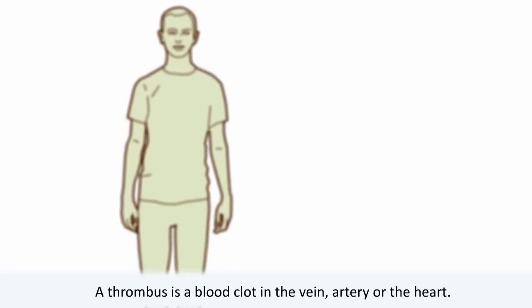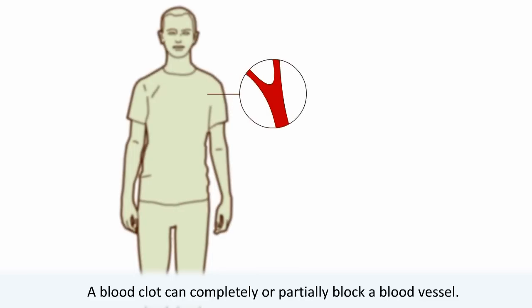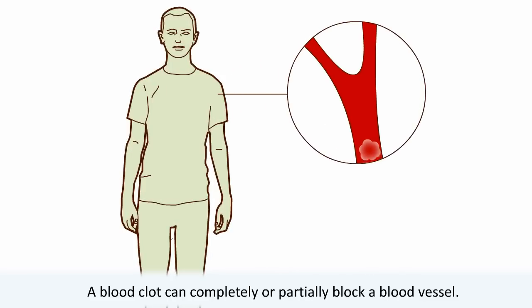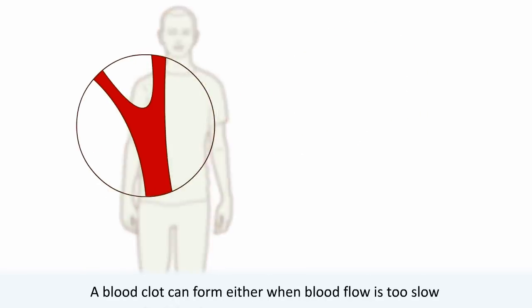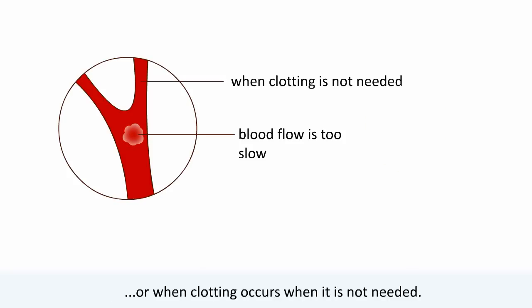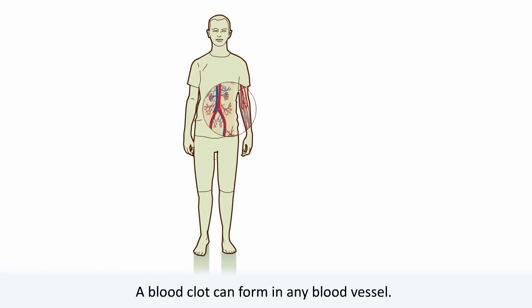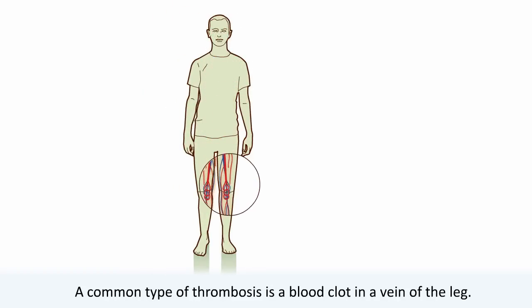A thrombus is a blood clot in a vein, artery, or heart. A blood clot can completely or partially block a blood vessel. A blood clot can form either when blood flow is too slow or when clotting occurs when it is not needed. A blood clot can form in any blood vessel.